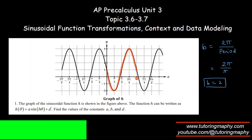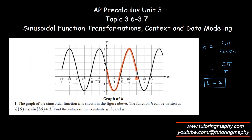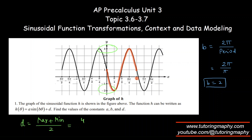Now, to find the midline D and amplitude, we use the direct formulas. The midline D is the maximum plus minimum divided by 2. The maximum is clearly 4 and the minimum is negative 2, so 4 plus (−2) over 2 gives us D = 1.